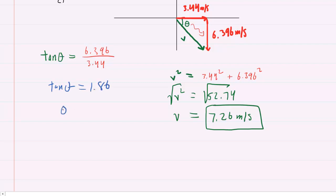And then to finish off finding the angle, you'll take the inverse tangent of that value. And when you do that, you're going to get 61.7 degrees.